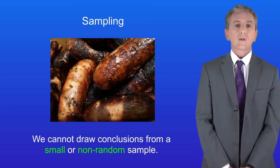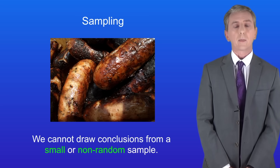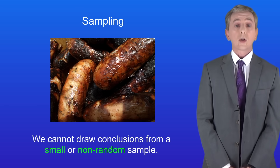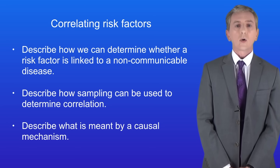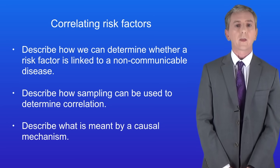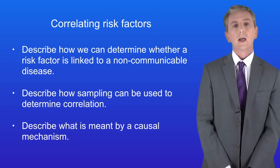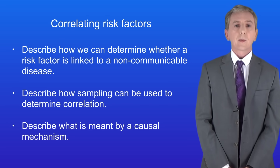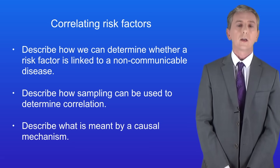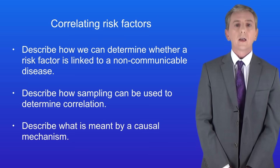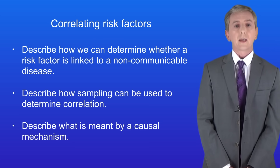You'll find plenty of questions on correlation and on sampling in my revision workbook — you can get that by clicking on the link above. Hopefully you should now be able to describe how we can determine whether a risk factor is linked to a disease, how sampling can be used to determine correlation, and what's meant by a causal mechanism.